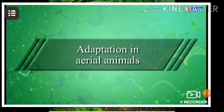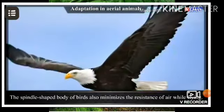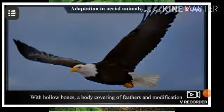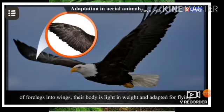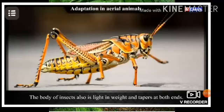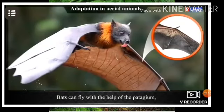In adaptation in aerial animals: the spindle-shaped body of birds minimizes air resistance while flying. Birds have hollow bones, a body covering of feathers, and modification of forelimbs into wings, making their body light and adapted for flying. The body of insects is also light in weight and tapers at both ends — they fly with two pairs of wings and walk with six stick-like legs. Bats fly with the help of the patagium, a thin fold of skin between their forelegs and hind legs.